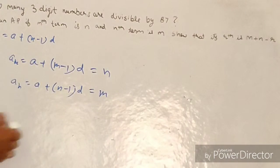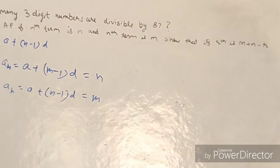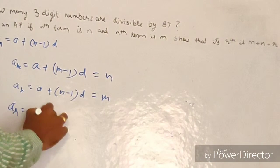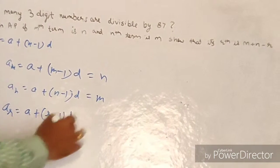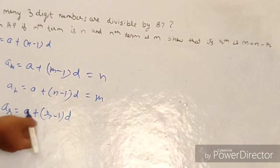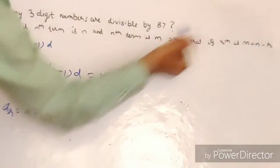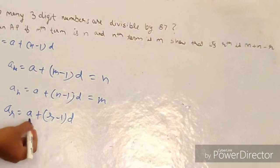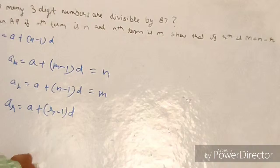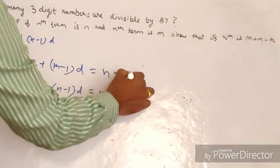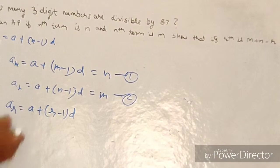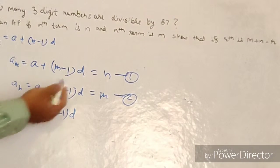We need to show that the rth term equals m + n − r. The rth term is: a(r) = a + (r − 1)d. To find the values of a and d, we take the two equations and subtract them from each other — this will eliminate a.